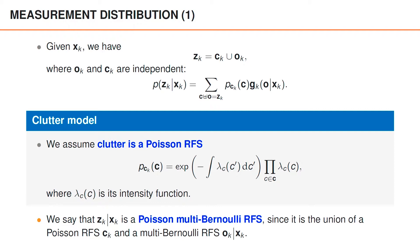Since zk given xk is the union of the Poisson random finite set ck and the multi-Bernoulli random finite set ok, we refer to zk as a Poisson multi-Bernoulli random finite set. The Poisson multi-Bernoulli is a very important random finite set distribution in multi-object tracking, and one that we use extensively also for assumed density filtering.